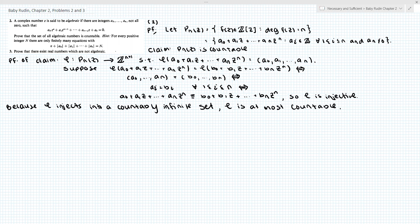And recall, we know the set of integers is certainly countable. And we also know from a theorem in Rudin that taking n tuples of a countable set is countable. So Z to the n plus 1 is countable.